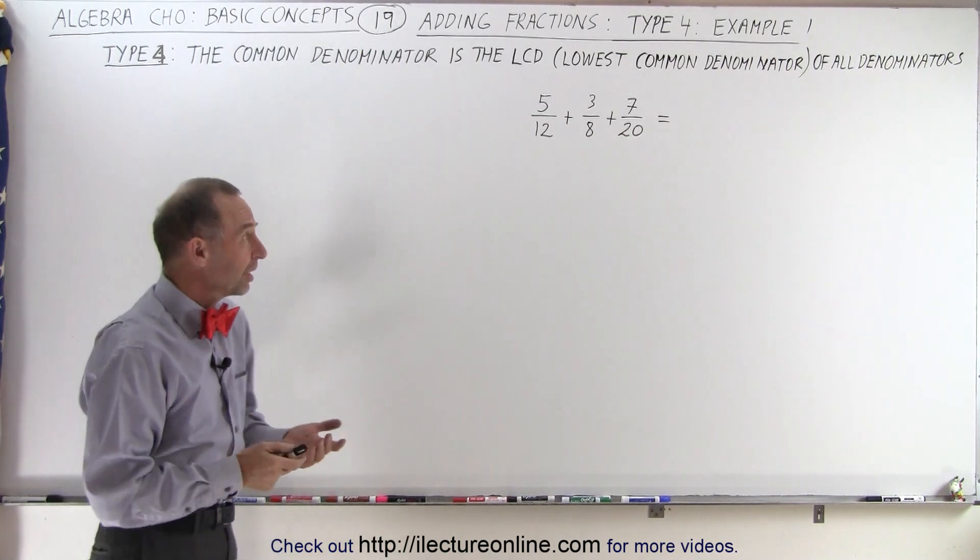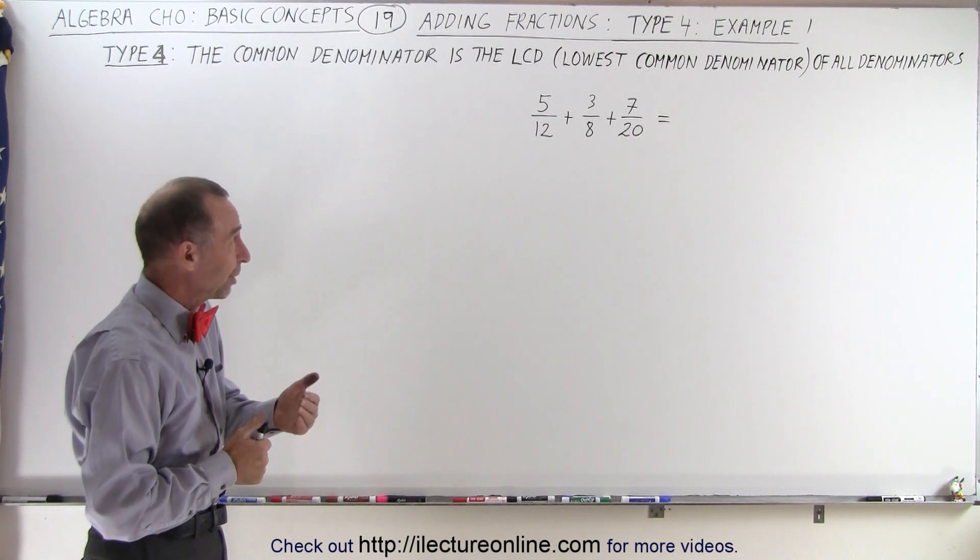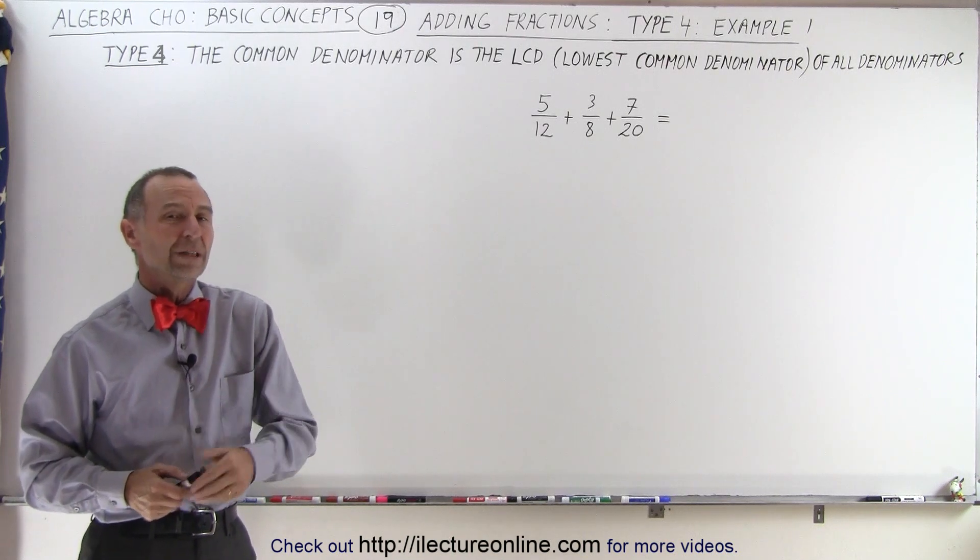Here again you can see that if you try to multiply all those denominators together, you end up with a very big denominator. So it's better to find the lowest common denominator. We're going to use two methods to do that.